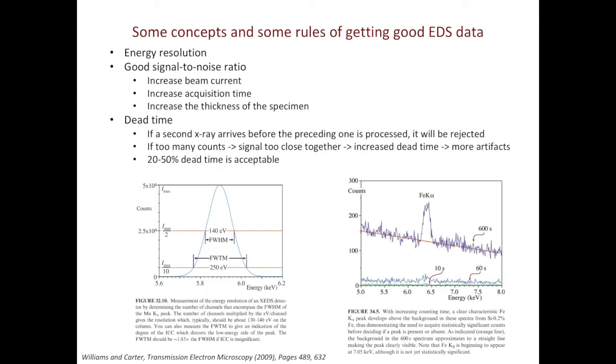Let's also look at some concepts and some rules of getting good EDS data. In TEM, we talk about spatial resolution. In spectroscopy, we talk about energy resolution. The energy resolution is usually defined as the full width half maximum. For a regular EDS, the full width half maximum for manganese K-alpha is about 140 eV. We will come back to this when we discuss electron energy loss spectroscopy, EELS.